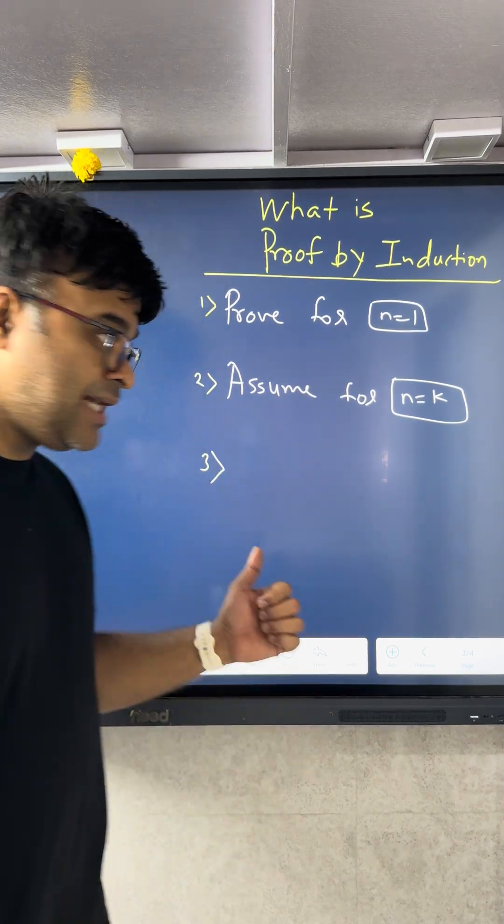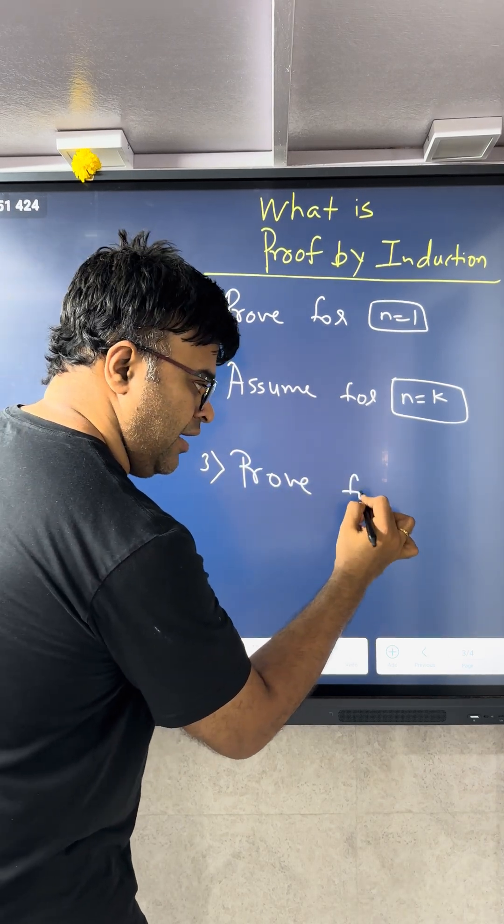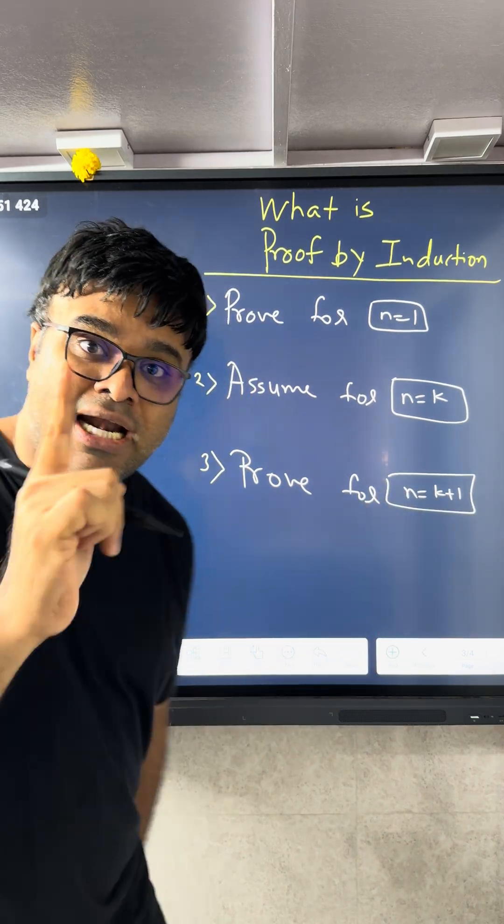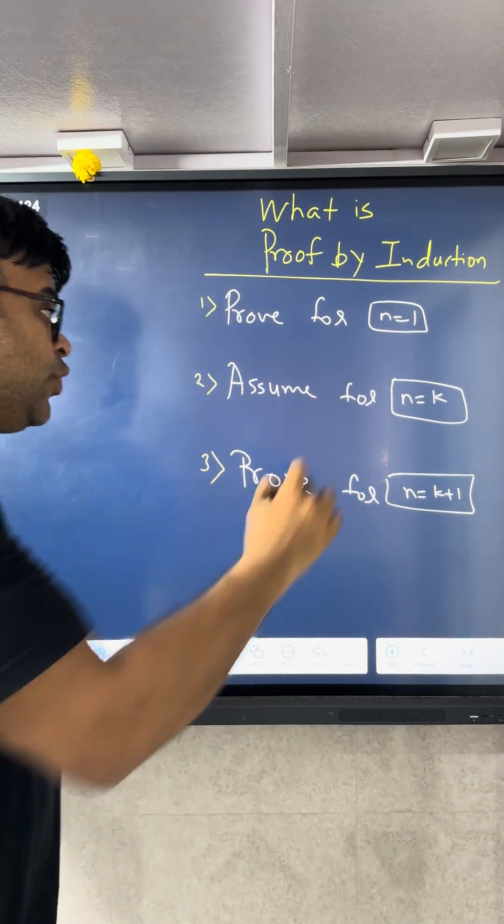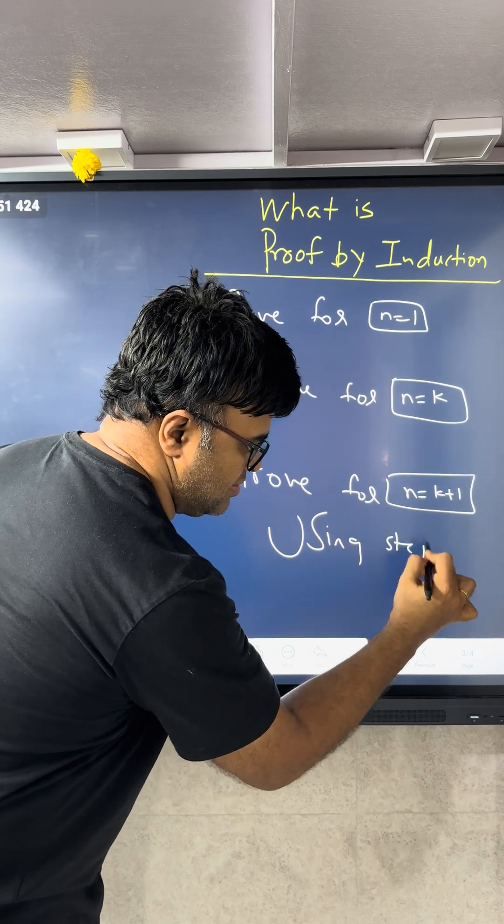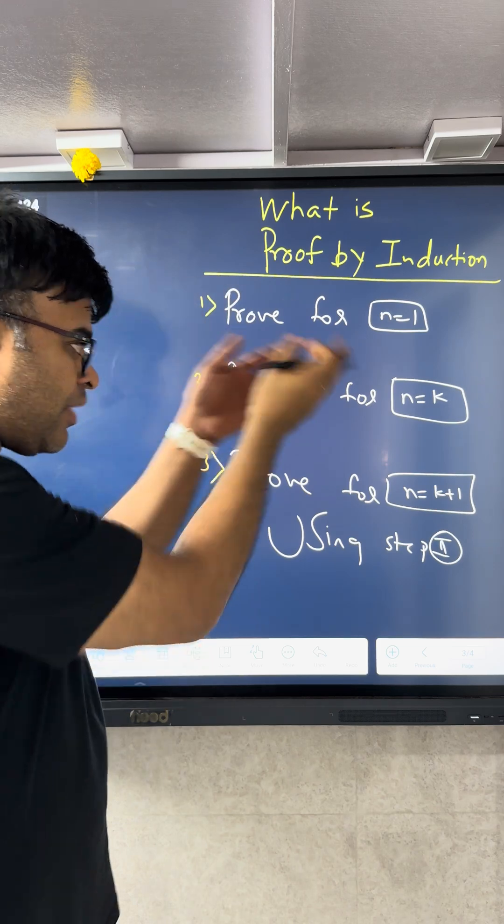But in step 3, we again prove for n equal to k plus 1. And the most important line of this entire thing is using step 2. No other way. If you can use what is assumed in step 2 and prove what is there in step 3...